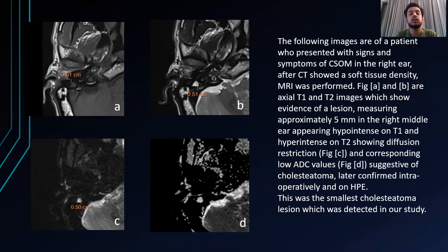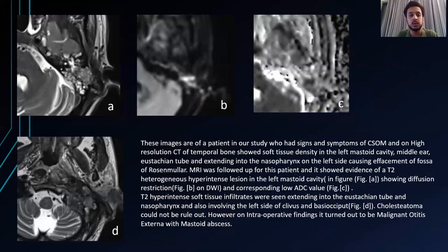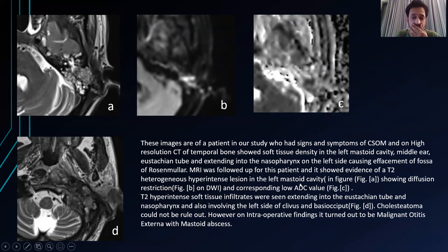RESOLVE can detect cholesteatomas of 2 to 3 mm. In another case, there was a soft tissue lesion appearing as soft tissue density on CT — cholesteatoma was one possible cause. However, MRI showed a soft tissue lesion in the left middle ear with hyperintensity on T2, diffusion restriction, and low ADC values. On intraoperative findings, it turned out to be malignant otitis externa with a mastoid abscess. So this was a false positive.